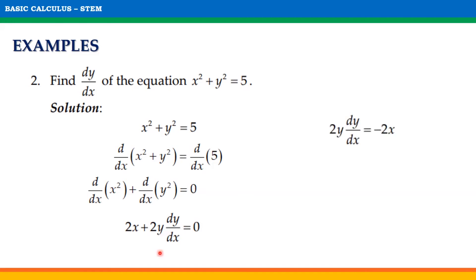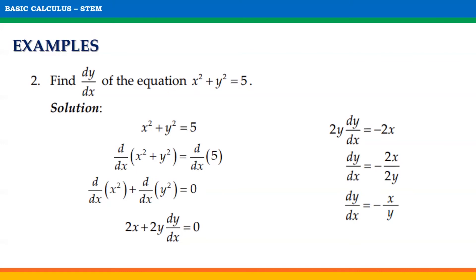Isolate the term 2x on the right side of the equation, so we will have 2y dy/dx equals negative 2x. Then divide both sides by 2y to solve for dy/dx, which will be equal to negative 2x over 2y. Simplifying, we get dy/dx equal to negative x over y.